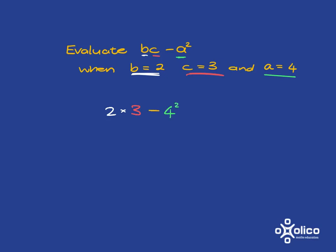2 times 3 is 6, and 6 minus 4 squared is 16. So we've got 6 subtract 16, and that's going to get us to the answer of negative 10.